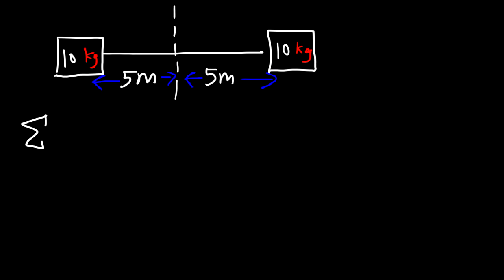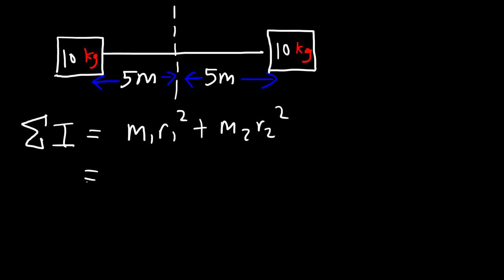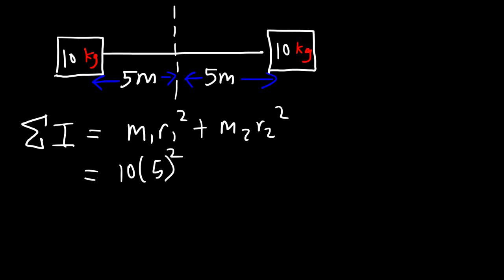The total inertia of this system is going to be the sum of the moment of inertia of every point. So we have the moment of inertia for the first object M1 R1 squared, plus the moment of inertia for the second object. So it's going to be 10 kilograms times R, which is 5 — R is the distance between the axis of rotation and the mass. The other one is also 10 times 5 squared.